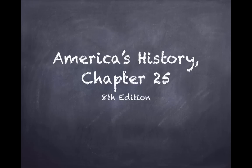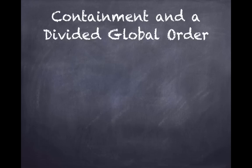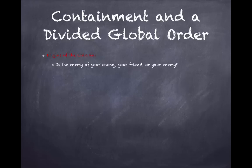Welcome to Chapter 25 on the birth of the Cold War. A key question to consider: is the enemy of your enemy your friend or your enemy? This is exactly what the United States faced during World War II. Germany was a major enemy, and Germany's enemy was the Soviet Union — so the Soviet Union started out as a friend.